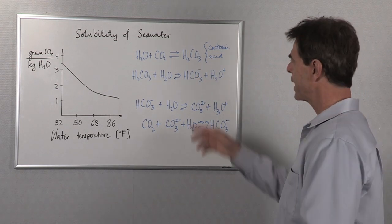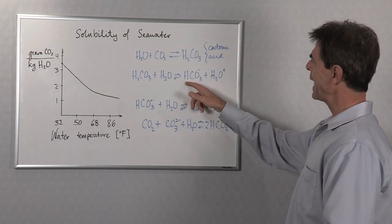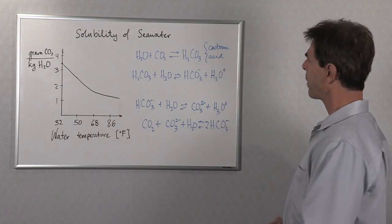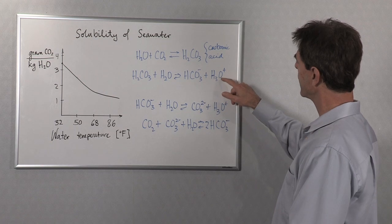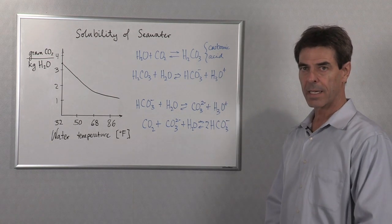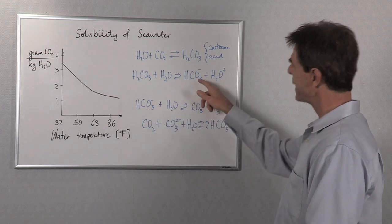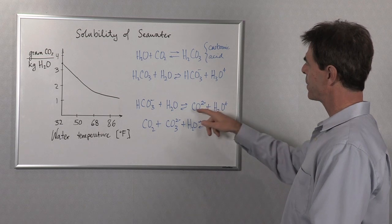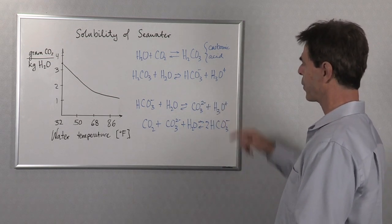H2CO3 itself interacts with water to produce HCO3-, that's the bicarbonate ion, and H3O+, which is hydronium. HCO3-, which is here, can interact with water itself to produce the carbonate ion and hydronium.